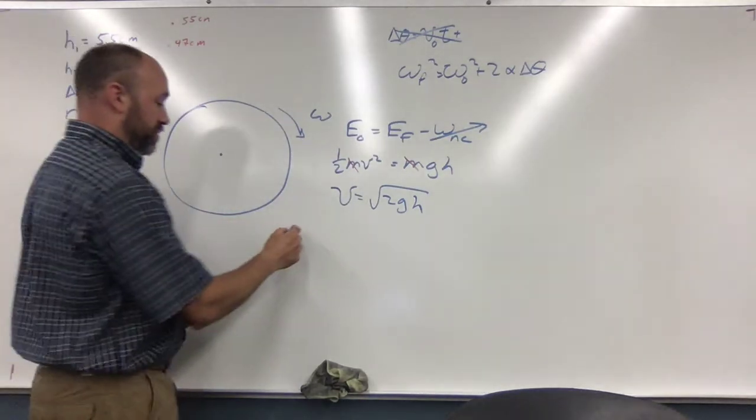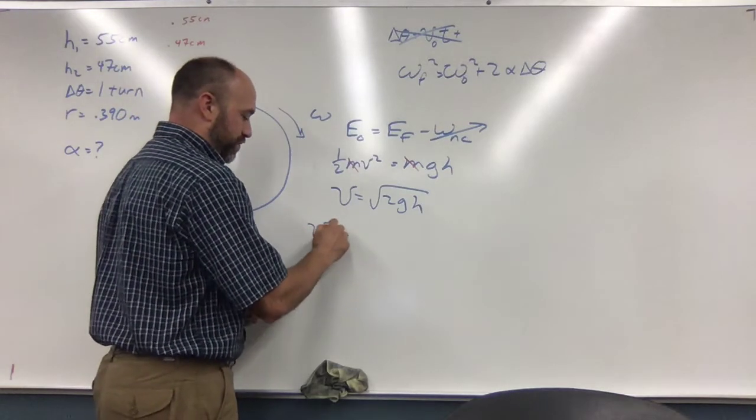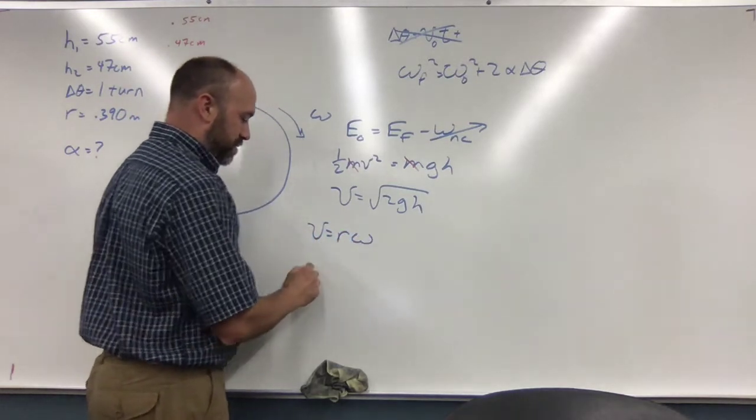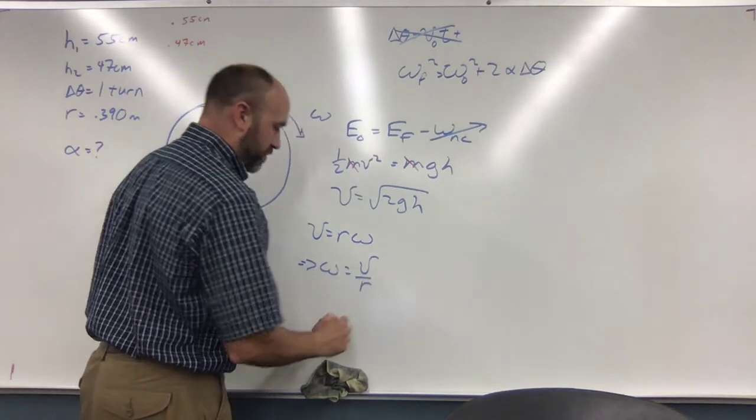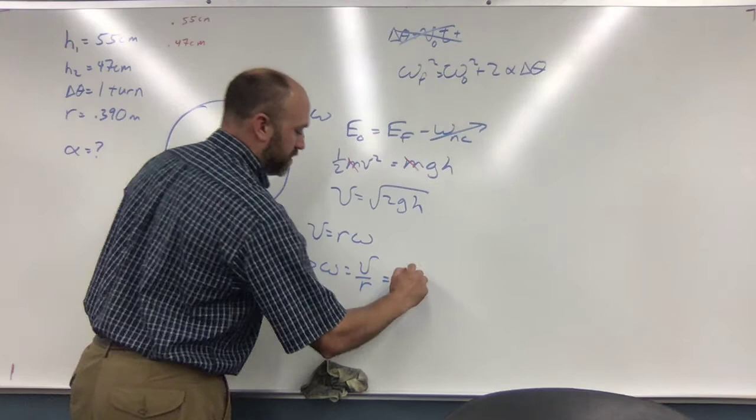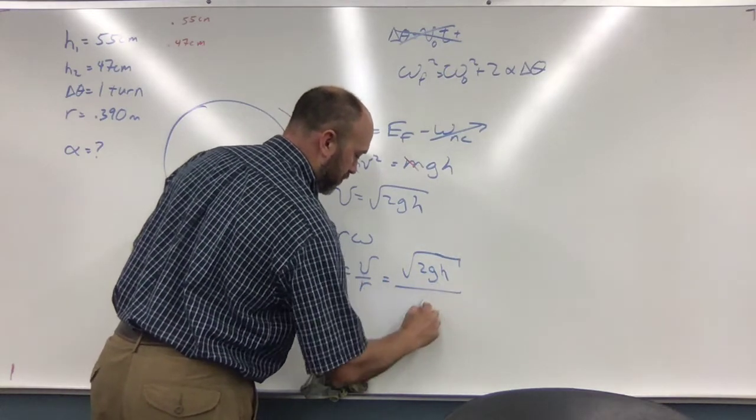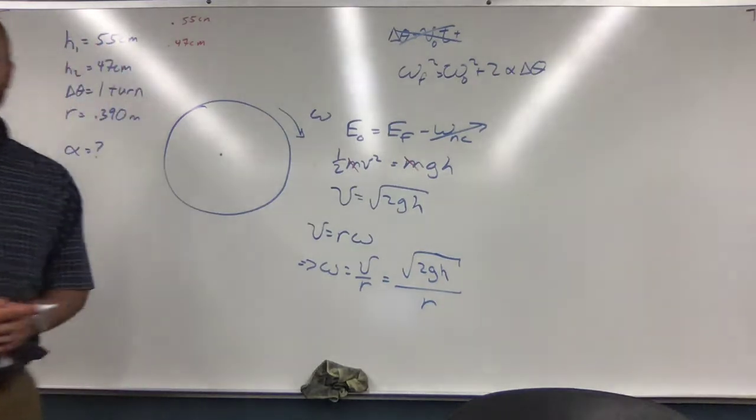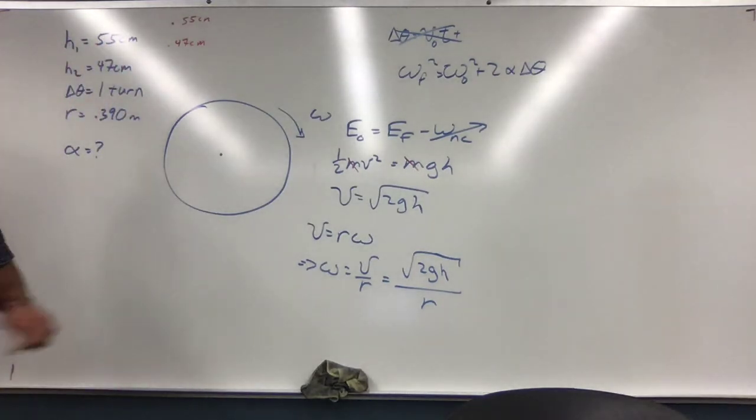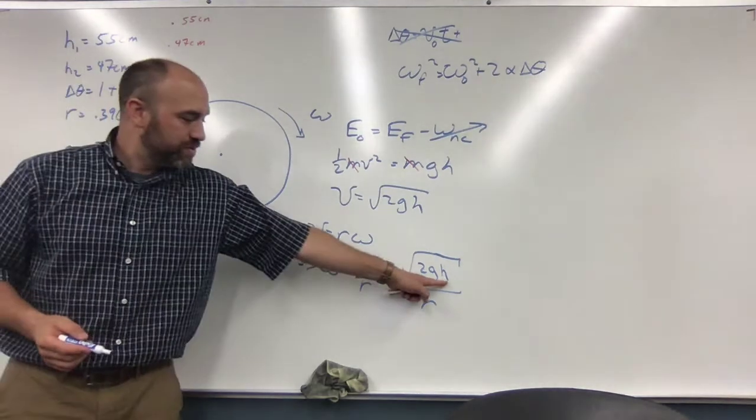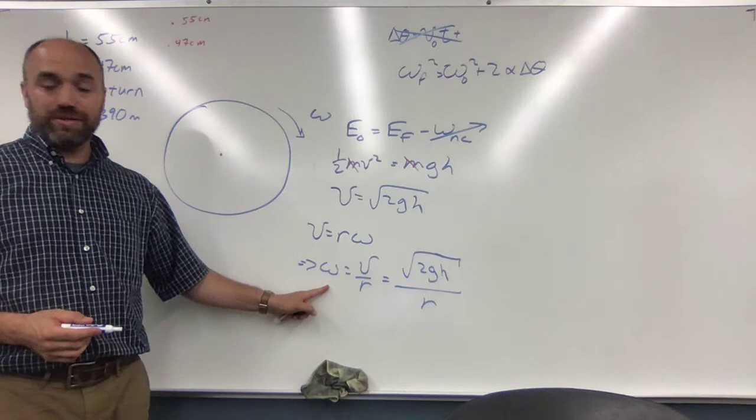And then we remember the translation between angular and linear. So V equals R omega. So omega equals V over R. So this would be square root of 2GH over R. And so we do this for our two heights. Then we can find our final and initial angular speed.